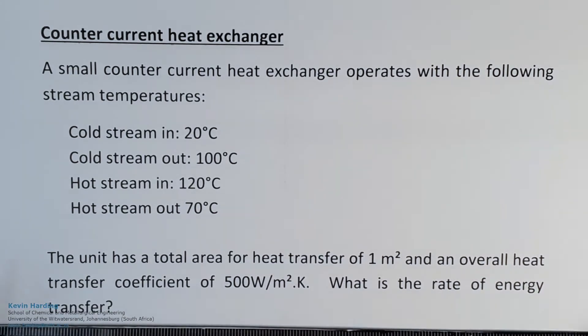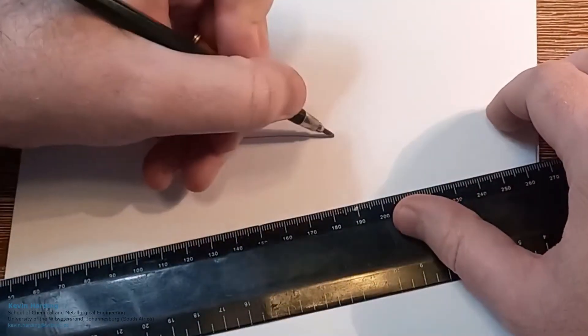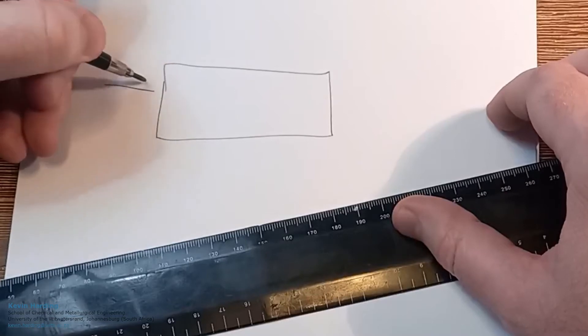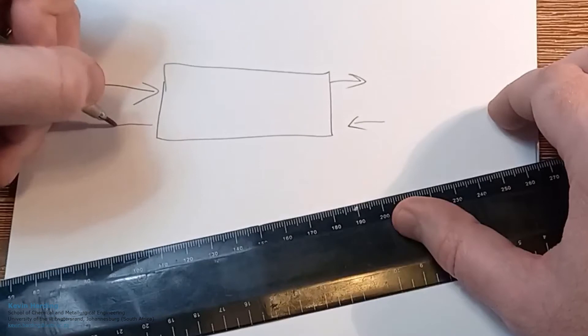What is the rate of energy transfer? Let's quickly draw what exactly is happening in that heat exchanger. It says it is counter-current, so we've got opposite flow happening here.